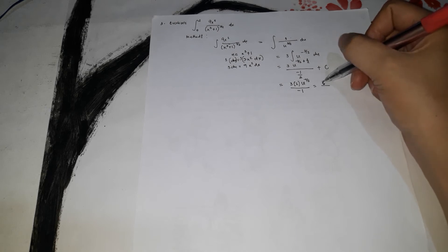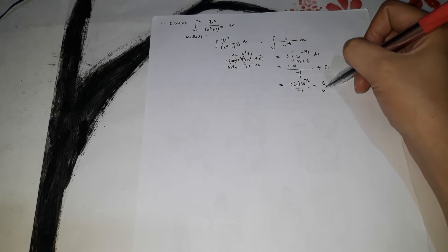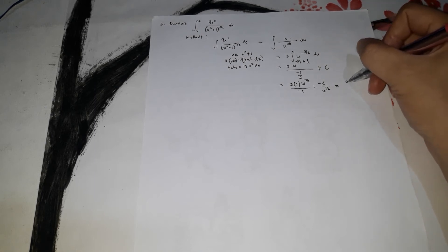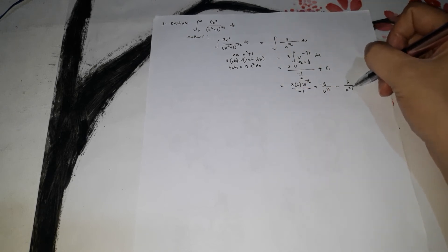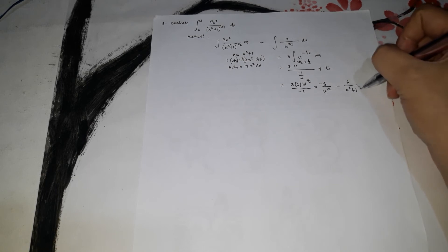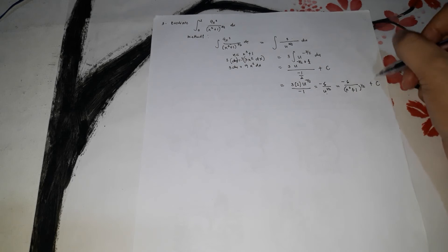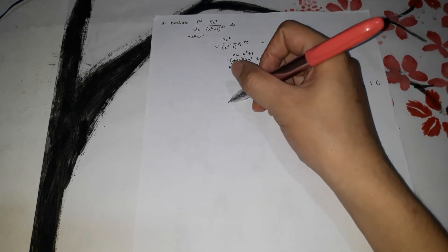The antiderivative simplifies to negative 6 over u^(1/2) plus c. Back-substituting u = x³ + 1, we get negative 6 over (x³ + 1)^(1/2) plus c. That's the antiderivative. Now we substitute the limits: the definite integral is from 0 to 2 of 9x² over (x³ + 1)^(3/2) dx.